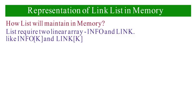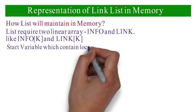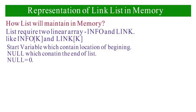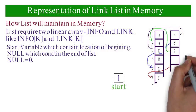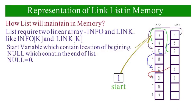For representation of a linked list in memory, the list requires two linear arrays called INFO and LINK, such that INFO[K] and LINK[K] contain the information part and the next pointer field of a node. The list also requires a variable named START which contains the location of the beginning of the list, and NULL which indicates the end of the list. We will choose NULL equal to zero.